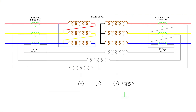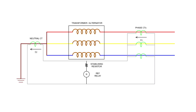Moving on to differential current protection. This type of protection involves relays that compare phase currents on either side of the transformer. If the differential current surpasses the set limit, the relay sends an operating signal. This safeguards the transformer from winding short-circuit faults and interturn faults. Lastly, we have restricted earth fault, or REF, protection.